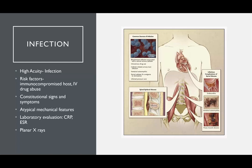The last topic in spine emergencies is infections. They can be a high-acuity situation in which something needs to be done. They occur in immunocompromised patients and often present with constitutional signs and symptoms — fevers, chills, myalgias, weight loss, et cetera — and atypical mechanical features. If you're not sure what's going on, CRP or ESR blood tests can sometimes tip you off that there may be an infection happening.